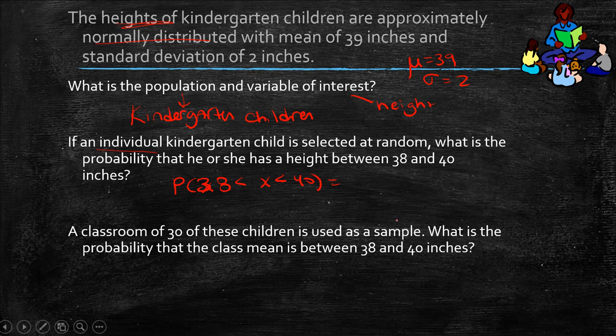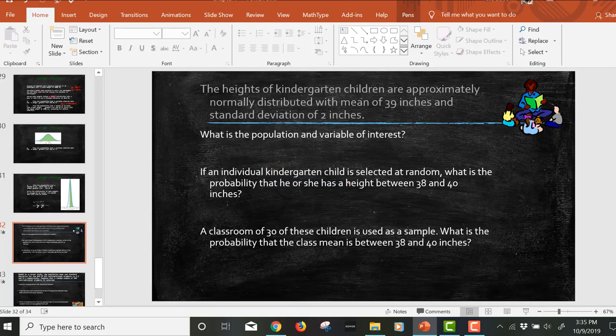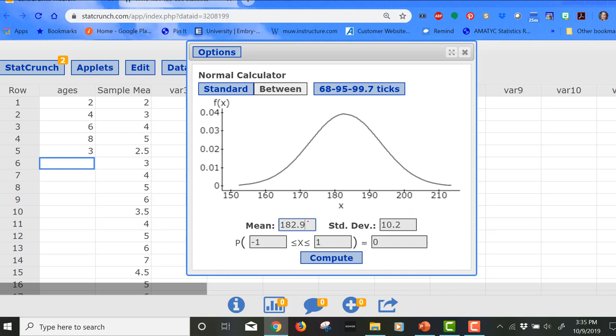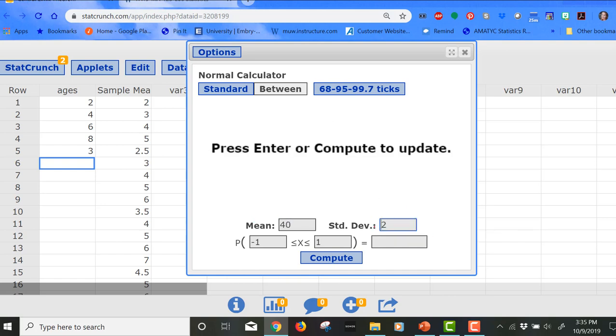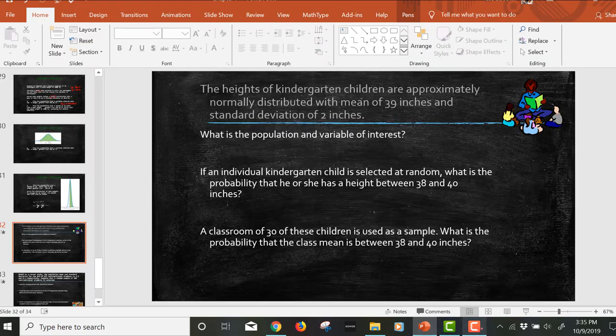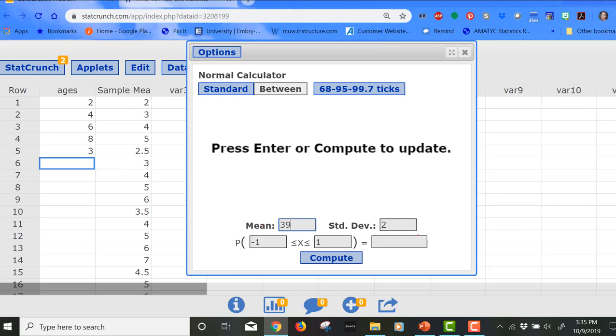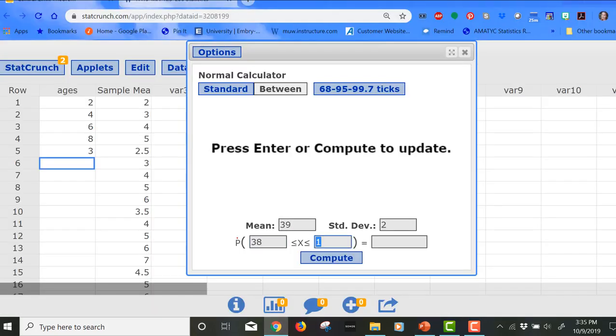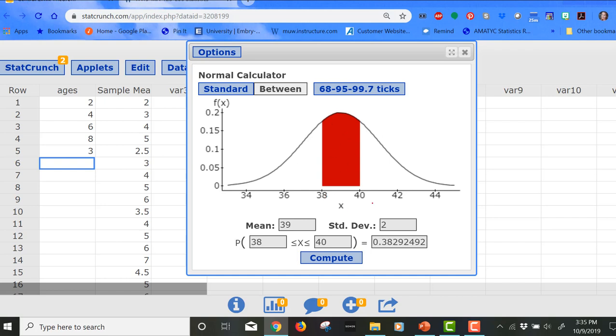All right. So 39, 2. So we're going to go to between because this time we're looking at between. We're finding the probability. So 39 and 2. And we are looking for the probability that they're between 38 and 40. So 38 and then 40. And so we know that 39 is going to be right in between those two. So let's see what happens. Yeah, there it is. So it's right in between. And that would be about 0.3829. So a 38% chance to select one child that would be between 38 and 40. Fantastic.